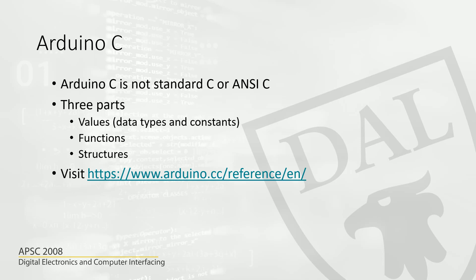Arduino C has three parts. The first part is the value, which explains the data type — we'll talk about data types right after this slide. We also have functions and structures. If you have any questions about what these are or you want to do a particular task, I highly recommend going to arduino.cc/reference/en. There you will be able to see all the values, functions, and structures, with clearly documented detailed definitions. You can look there and then get into programming Arduino. That is Arduino C.